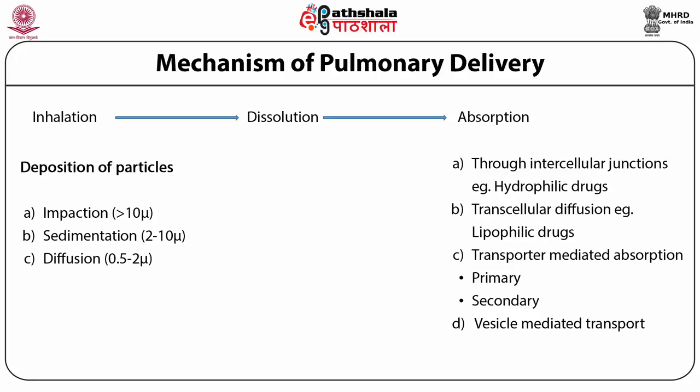Active transport is of two types: primary active transport, also known as direct active transport, which uses cellular metabolic energy — for example, the sodium-potassium pump — while secondary transport utilizes the electrochemical gradient for conveyance of molecules across the biological membrane.